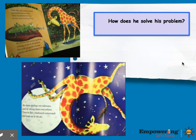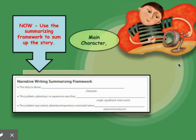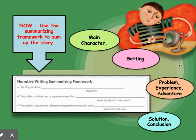How does he solve his problem? Use the summarizing framework to sum up the story: main character, setting, problem, experience or adventure, solution, and conclusion.